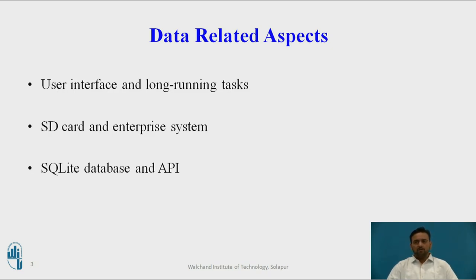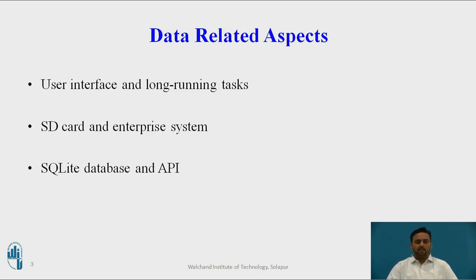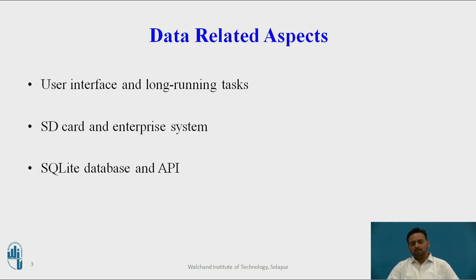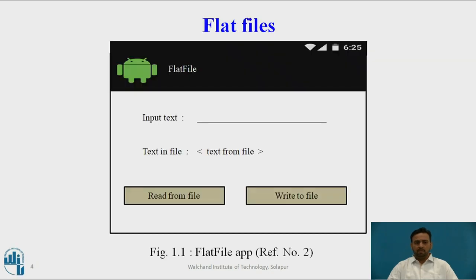There are two types of data: primitive and complex, and also structured and unstructured data. We will now see the difference between them. SQLite database and APIs deal with storing data that is interrelated, which is called structured data. Unstructured data is not interrelated between its elements. SQLite database and application program interfaces handle the storing of relational, structured data.